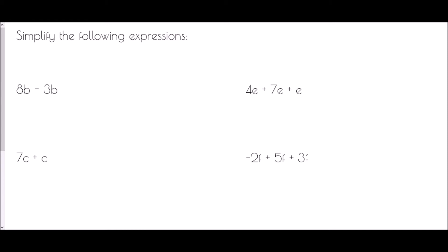So let's look at simplifying some expressions. The term 'simplify the expression' is exactly the same as collecting like terms - we're looking for the like terms within the expression. Within the expression 8B take away 3B, there are B's in both cases. You can imagine what's going on - this could be eight bananas take away three bananas. If I had eight of these things and I took away three, I'd be left with five, so 5B.